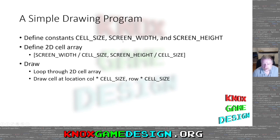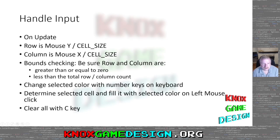That can also be window width or window height. We need a 2D array of cells. In this example, cells are 16 by 16. The array will be screen_width divided by cell_size by screen_height divided by cell_size. On our draw call, we loop through all those cells and draw the cell at its location: column times cell_size for X, and row times cell_size for Y.